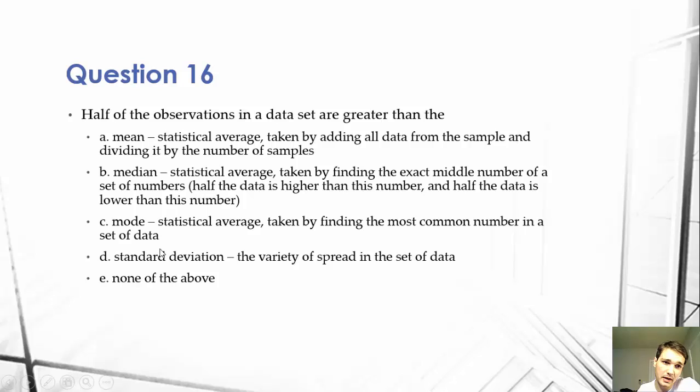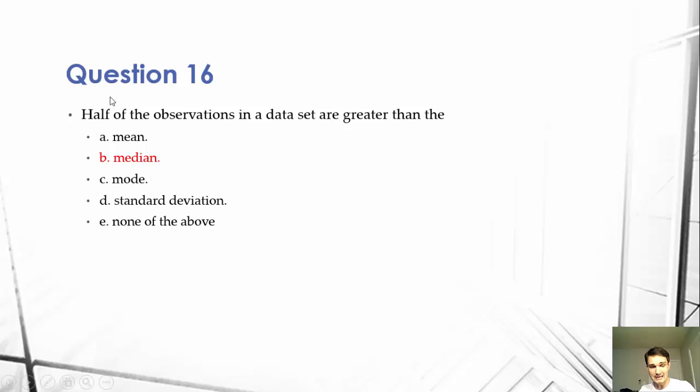Again, mode would be the most common number, mean would be the average taken by adding every number up and dividing it by the total, and median would be the exact middle number. So obviously B is the correct answer.